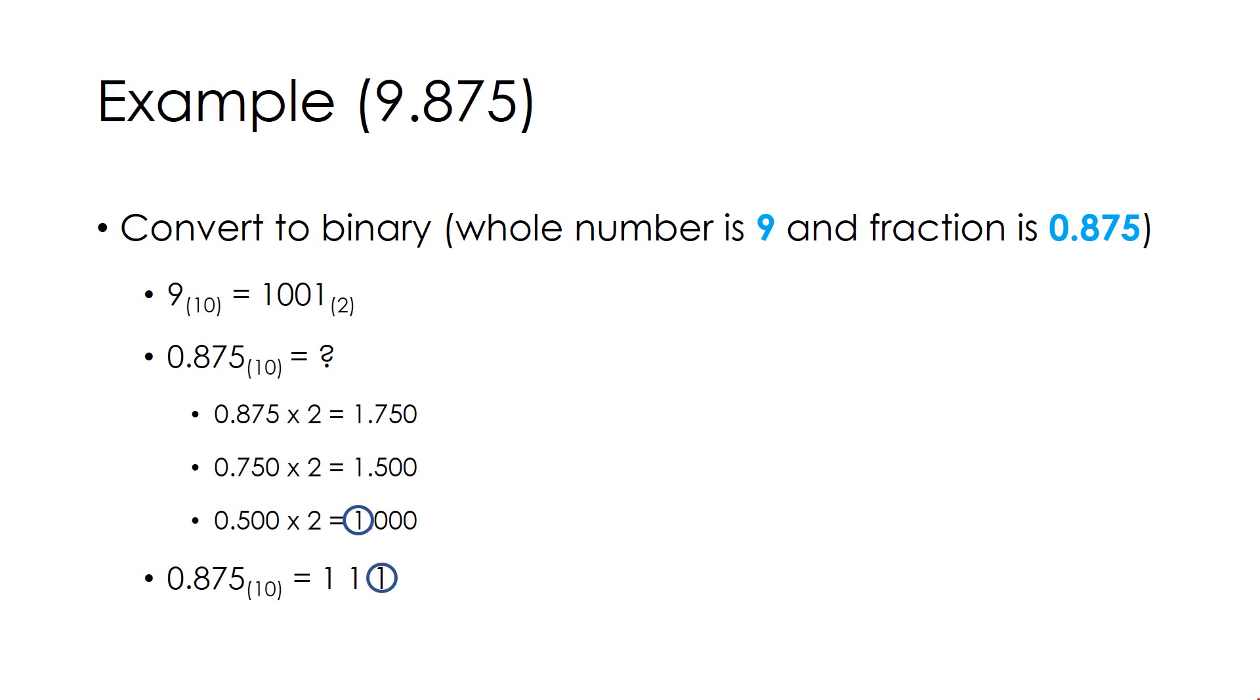Thus 0.875 in binary is 111. And 9.875 in binary can be written as 1001.111.